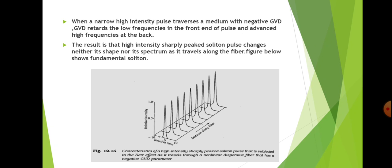With negative group velocity dispersion, the GVD retards the low frequency at the front end of the pulse and advances the high frequency at the back. So in negative GVD, the front end is retarded and moves slower, while the back end moves faster, reducing the pulse width. The soliton, when transmitted through the optical fiber, maintains its shape by nullifying the effect of GVD through the SPM effect.